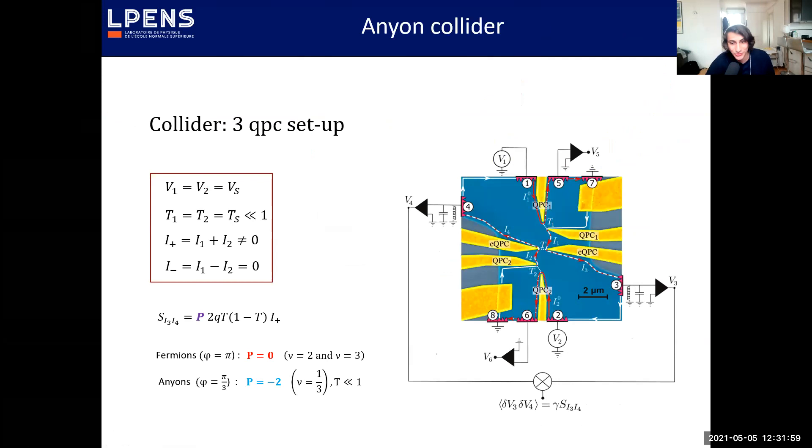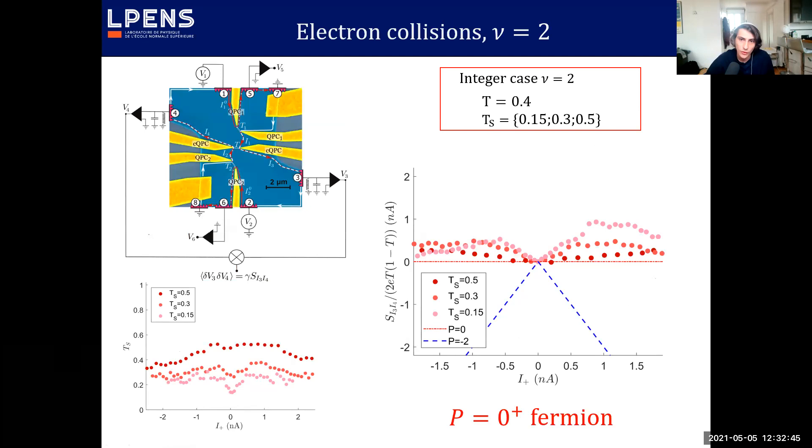Now we can go to the most exciting part: the anyon collider. Now we are back into a three quantum point contact setup. We are in the balance situation with V1 and V2 equal, the transmission at the input are also equal to Ti=Ts set in the weak backscattering regime for the fractional case and we have no difference of current and only total input current will be the parameter of interest and we want to measure the cross-correlation and extract this p factor from this cross-correlation measurement.